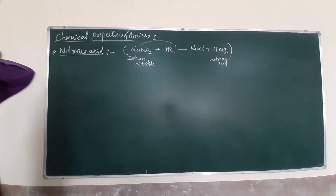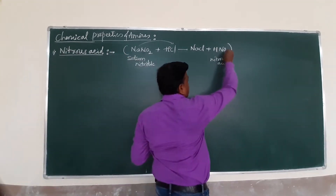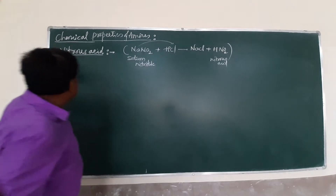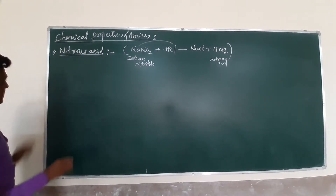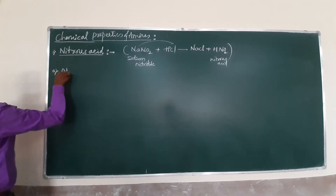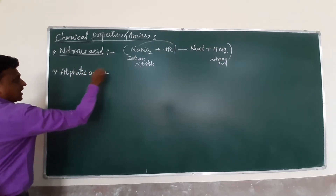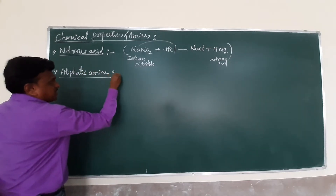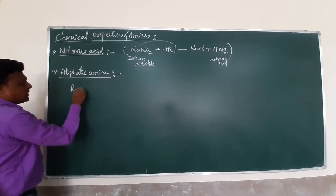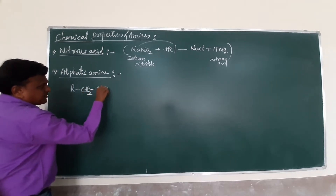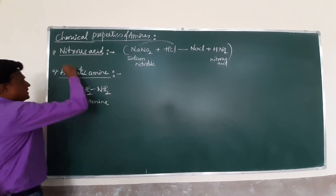Keep in mind: nitrous acid has the formula HNO2. This HNO2 reacts with amines. We start one by one — first, aliphatic primary amines. Consider R-NH2, or better, R-CH2-NH2. This is a primary aliphatic amine.